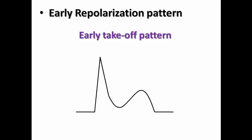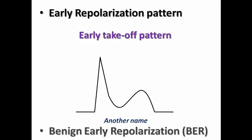Early repolarization pattern is a morphological description, as it describes the ST segment taking up early from the QRS complex, leading to the J-point being elevated above the baseline. It is also an etiological description, describing an abnormality in the phase of ventricular repolarization. Another name is benign early repolarization pattern, abbreviated as PAR, though I prefer the term early repolarization pattern — and I'll explain why at the end of this lecture.